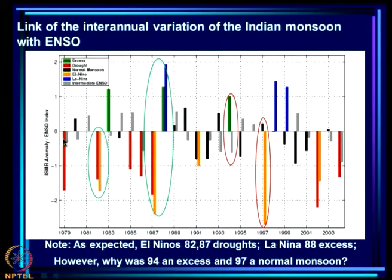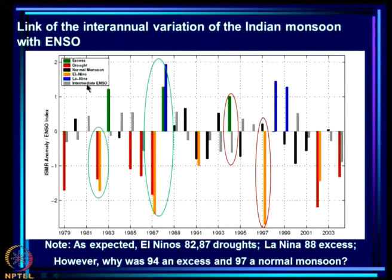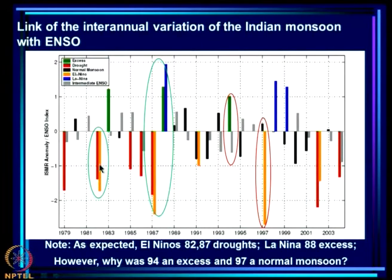Next to the ISMR stick is a stick showing whether ENSO is favorable or not. When it is negative, ENSO is unfavorable; when it is positive, ENSO is favorable. A highly favorable condition is called a La Niña — shown as a blue stick — and El Niño would be orange, representing a departure of the ENSO index beyond one standard deviation deficit. This is a highly unfavorable situation.